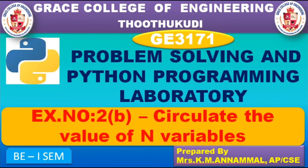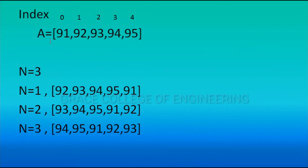G3171 Problem Solving and Python Programming, Laboratory Exercise Number 2B: Circulate the Value of N Variables. Before doing the program, let's see the concept. A list is created: a = [91, 92, 93, 94, 95]. The index value of this list — index 0 stores 91, index 1 stores 92, index 2 stores 93, index 3 stores 94.